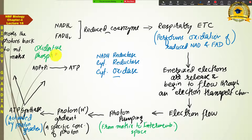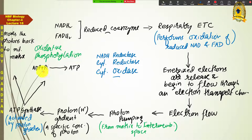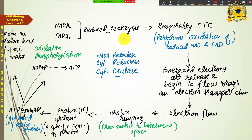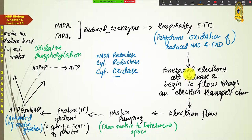Why is it called oxidative phosphorylation? It is just a phosphorylation reaction — why is the word 'oxidative' added? Phosphorylation means addition of phosphate, and here addition of phosphate to ADP is occurring, so it is a phosphorylation reaction. But it is called 'oxidative' because the electrons that were released here entered the electron transport chain and during their flow caused proton pumping.